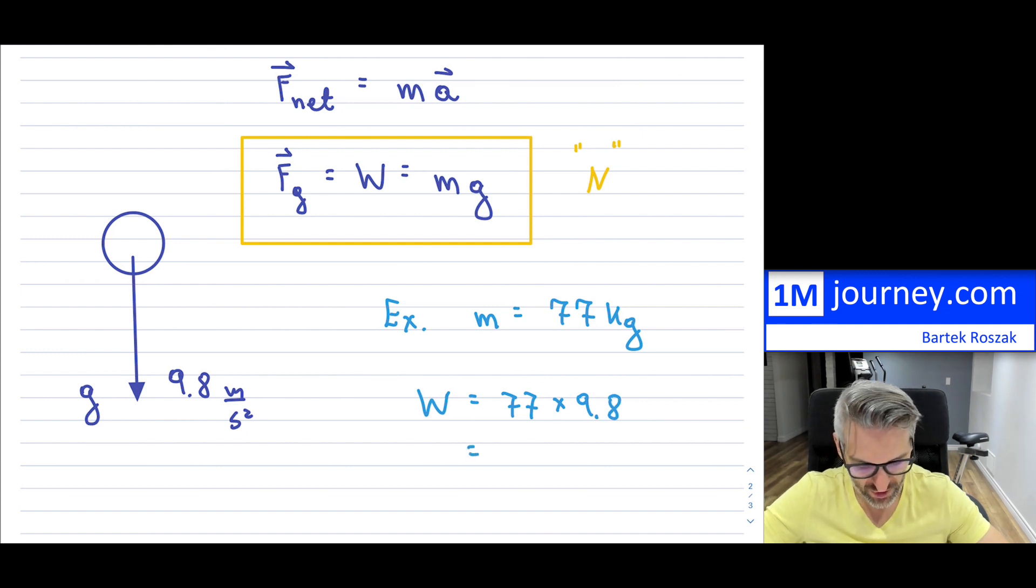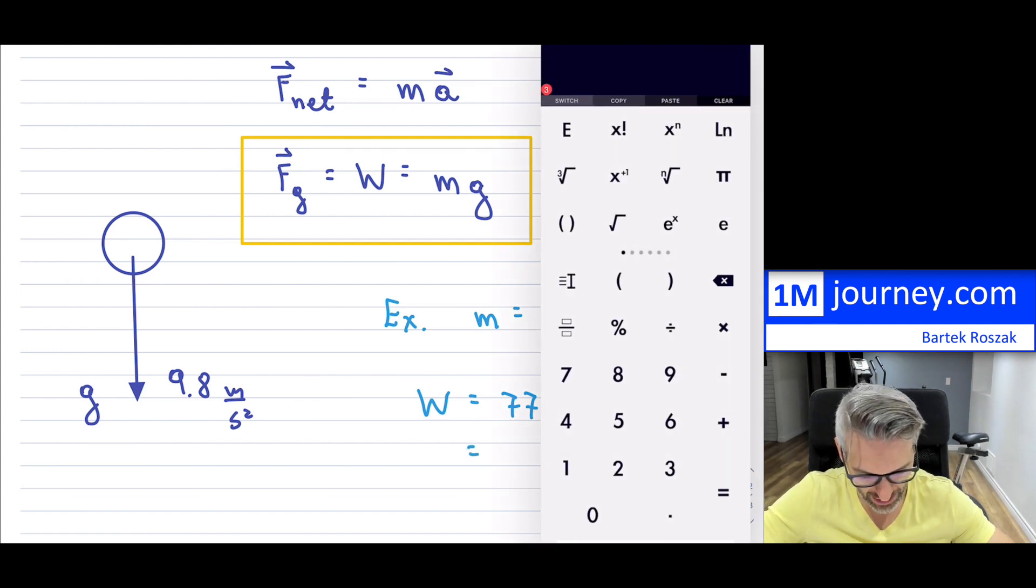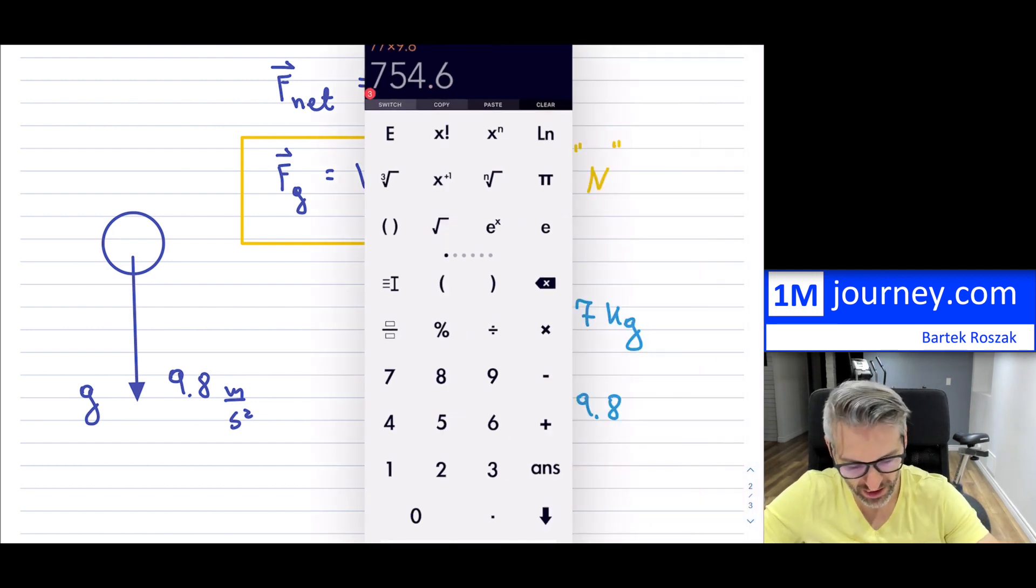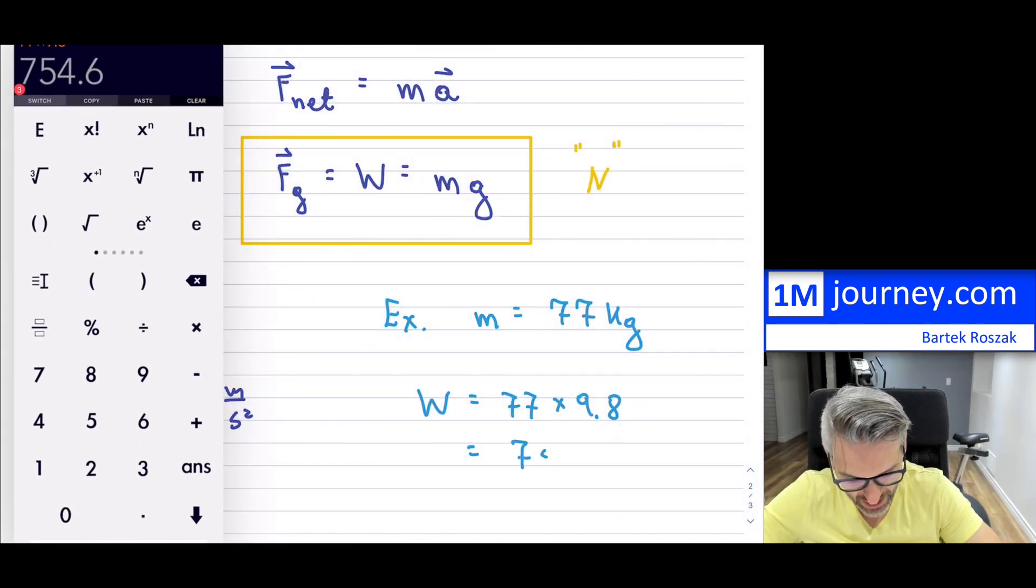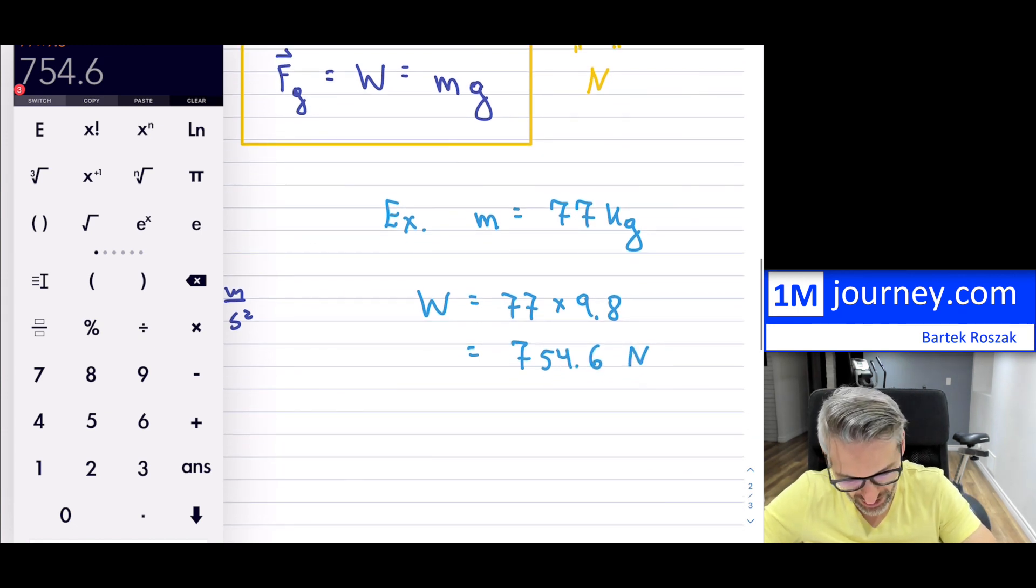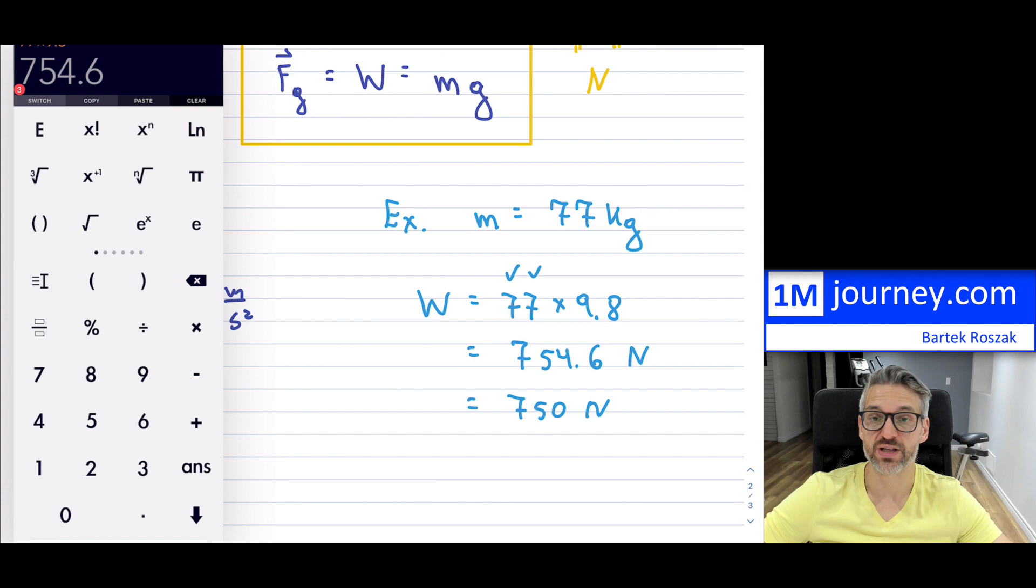And from this, you can calculate, I can take out a calculator, plug it back in and very quickly get what the force is. Now this particular force is in newtons. And so here I'm going to just round it, so I'll round it to 750 newtons because I had two sig figs for 77.